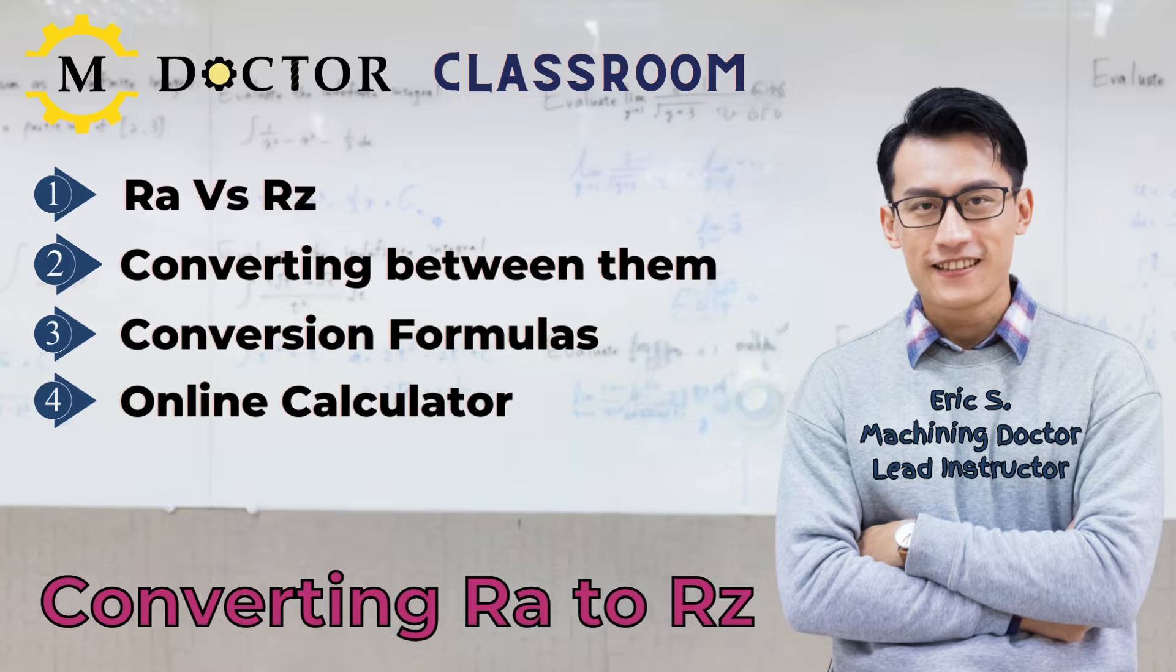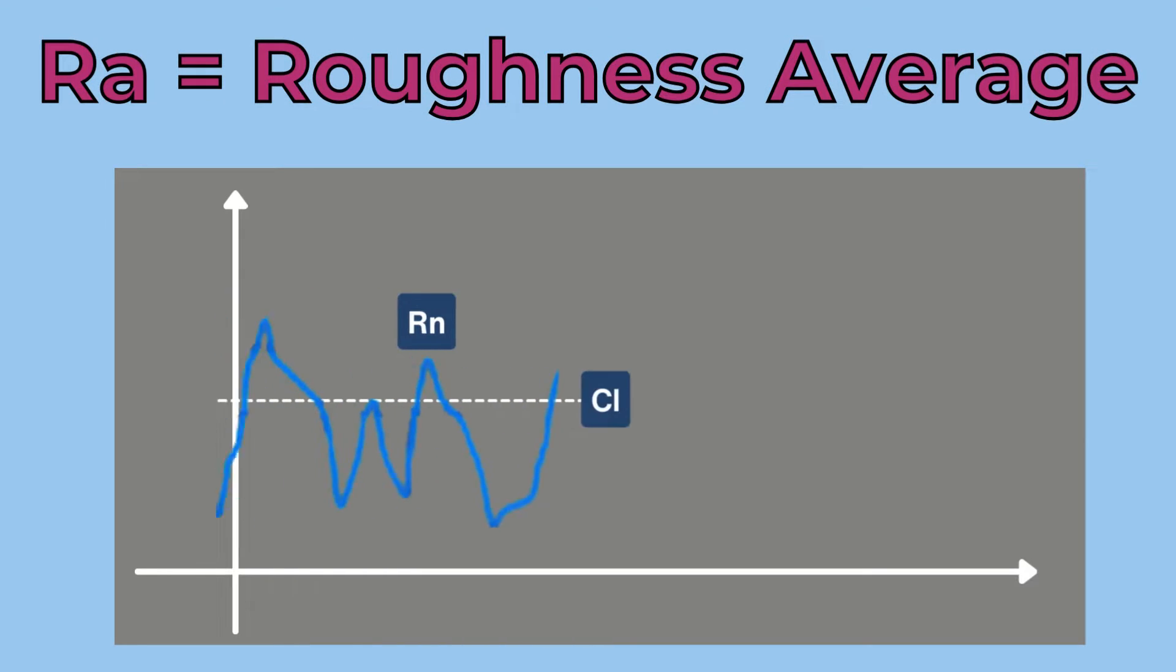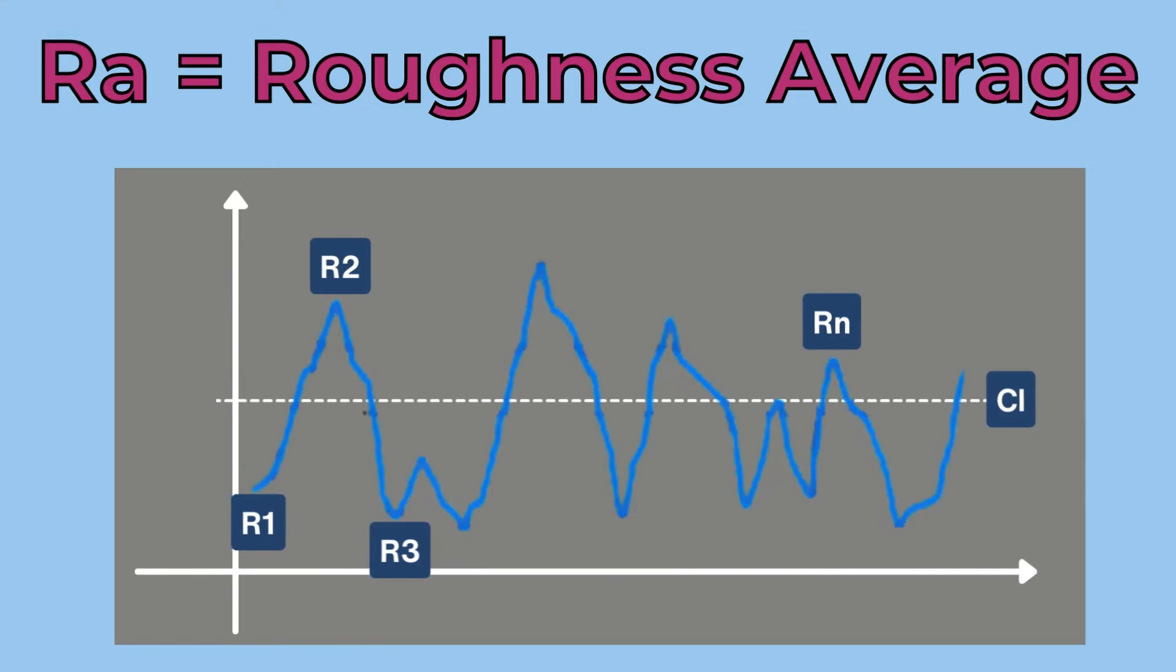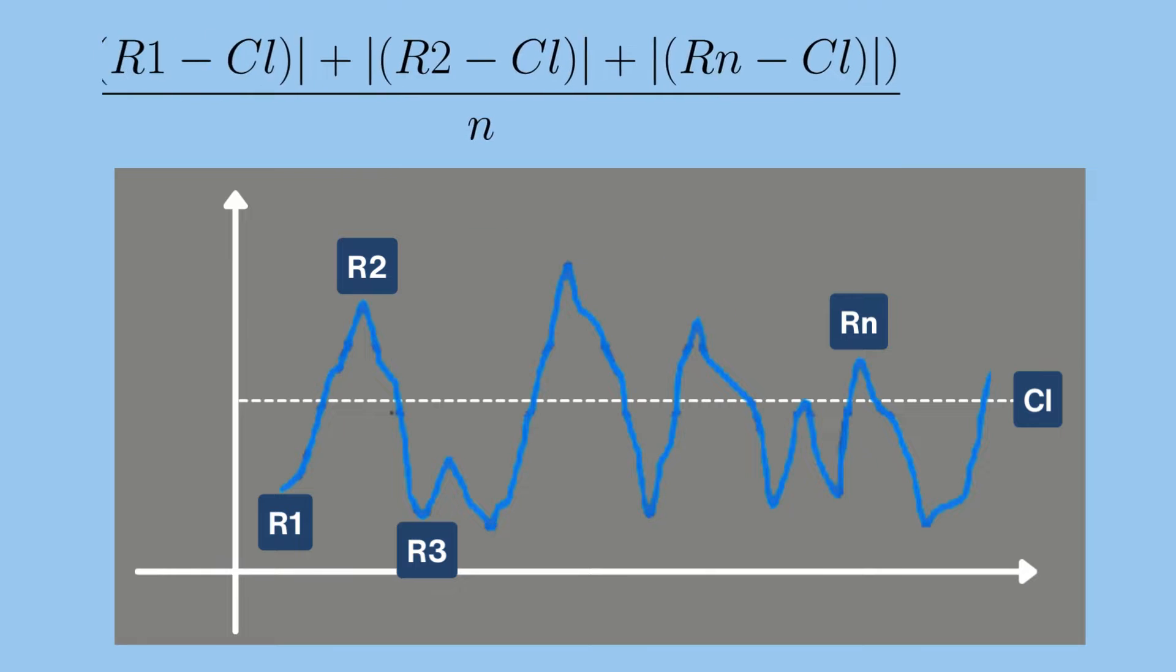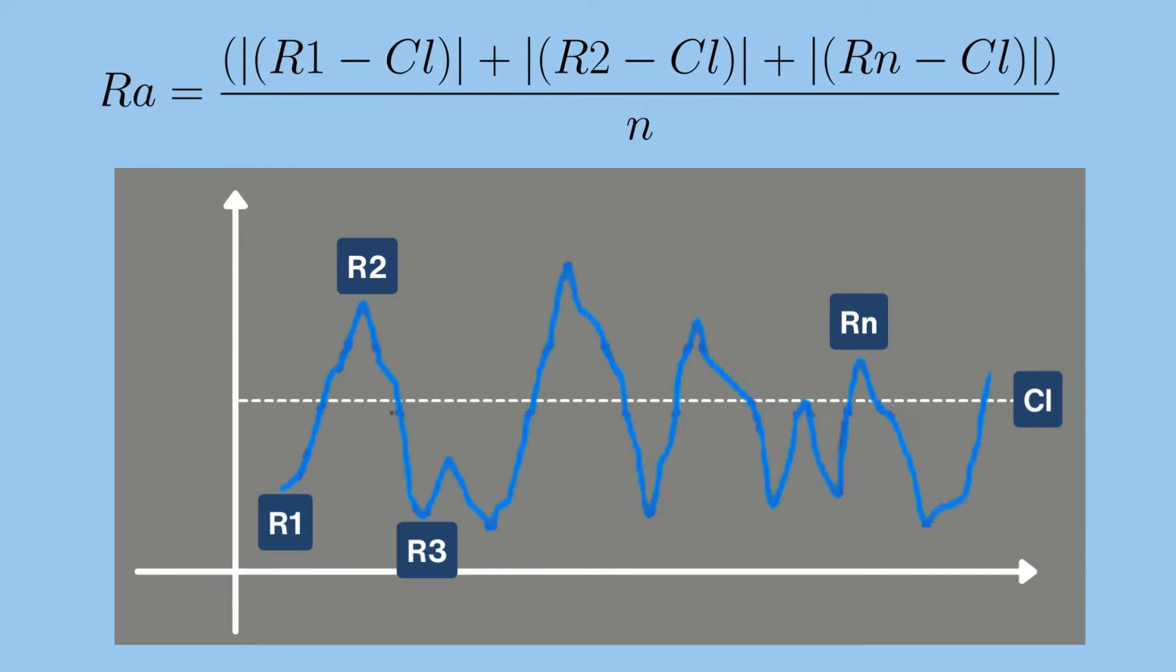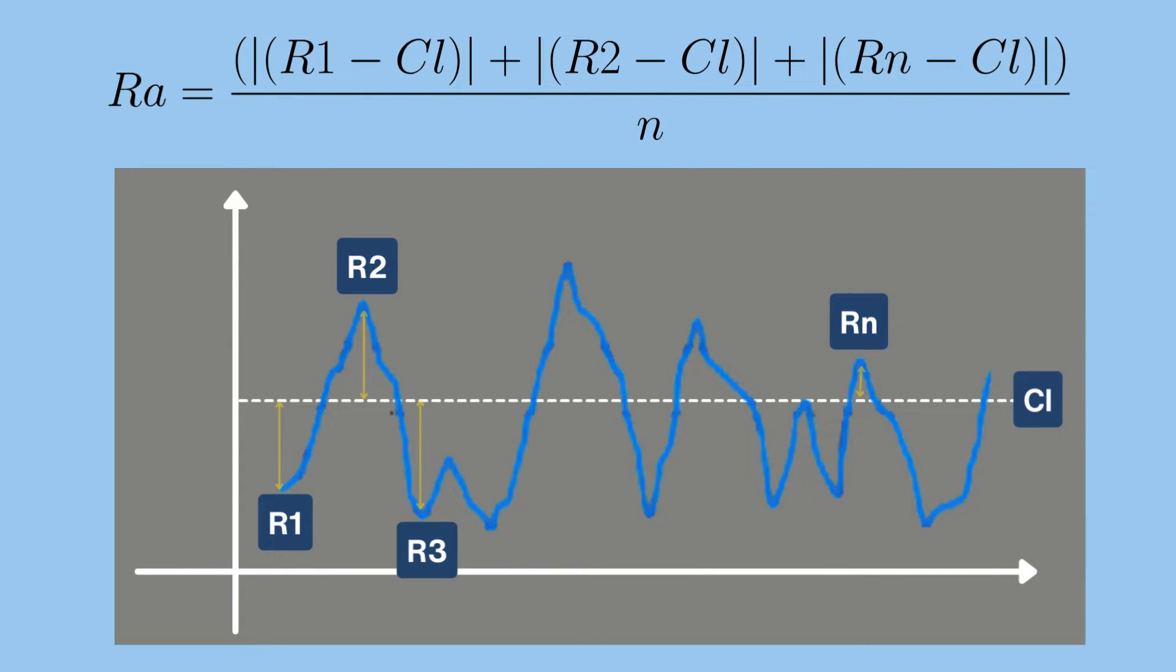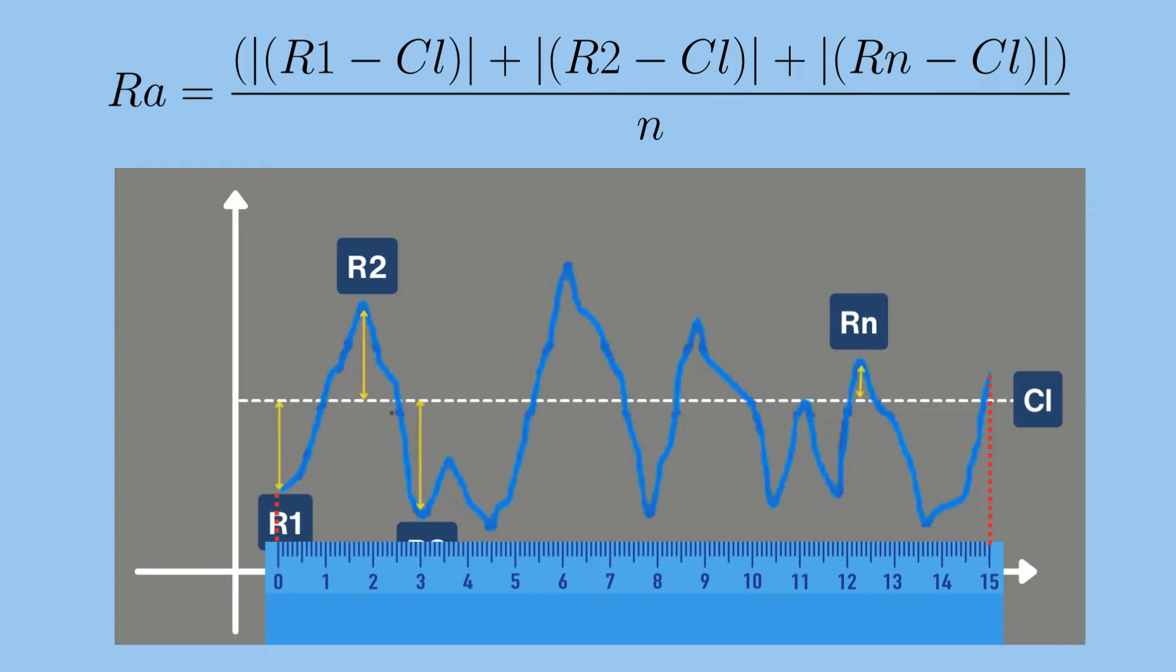First, let's start with a brief introduction to both units. RA stands for Roughness Average and is the most commonly used unit for measuring surface finish. According to ASME B46.1, RA is the arithmetic average of the absolute values of the profile height deviations from the centerline recorded within the evaluation length.